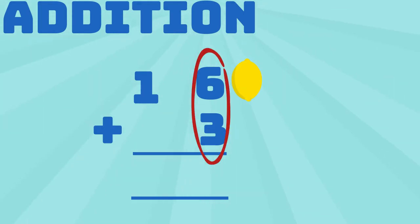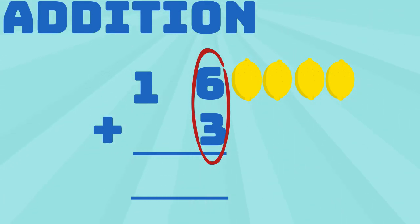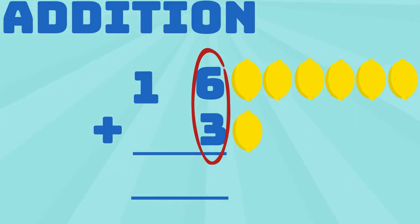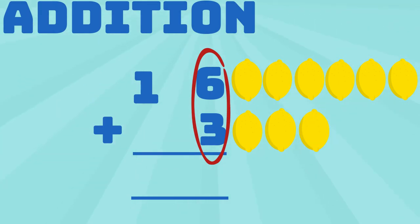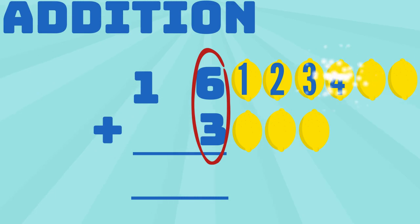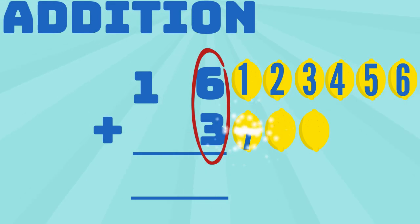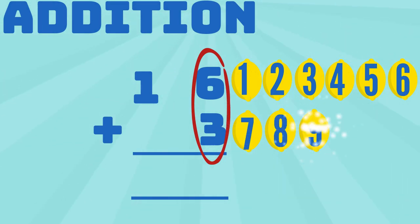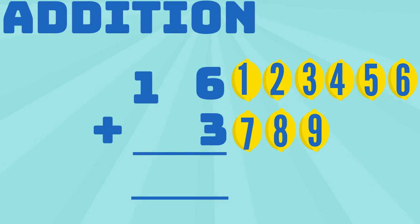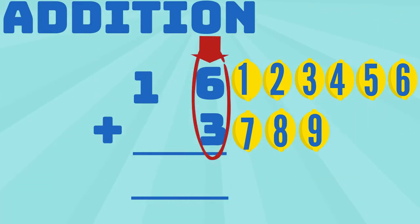1 lemon, 2 lemon, 3 lemon, 4 lemon, 5 lemon, 6 lemon, plus 1 lemon, 2 lemon, 3 lemons equals 1, 2, 3, 4, 5, 6, 7, 8, 9 lemons. That means 6 plus 3 equals 9.